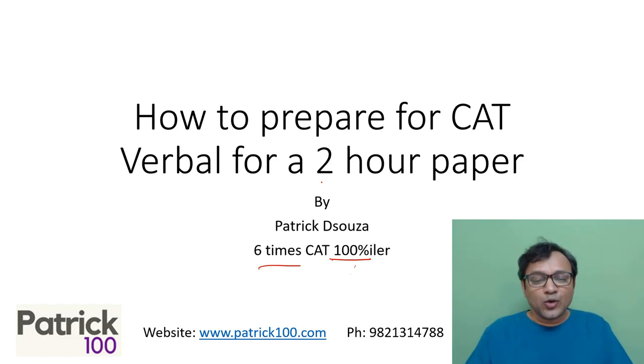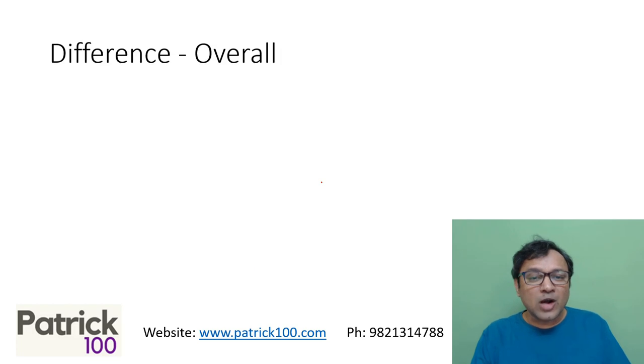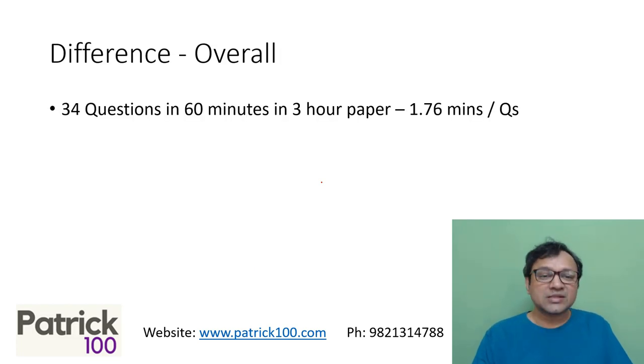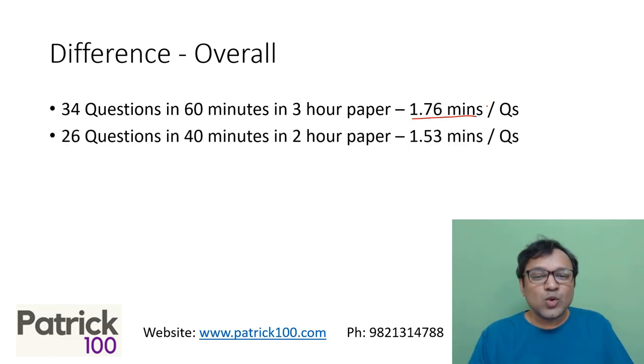Let's compare the 2-hour paper and the 3-hour paper. In the 3-hour paper, you have 34 questions in 60 minutes, which is 1.76 minutes per question. In the 2-hour paper, you have 40 minutes and 26 questions, less time per question. They have reduced the time from 60 to 40 but have not reduced the questions proportionately.